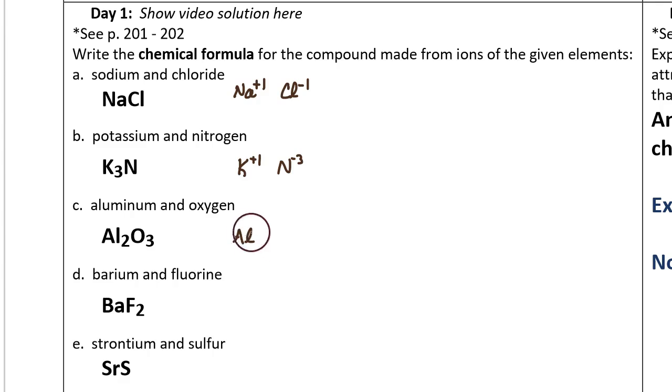Aluminum is in group 3A, so its ion has a positive three charge. Aluminum and oxygen makes the oxide ion with a negative two charge. Positive three and negative two are not going to add together to make a neutral compound.